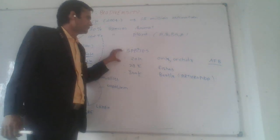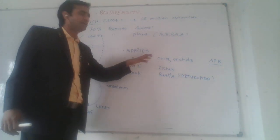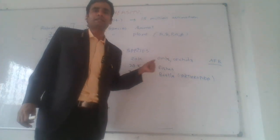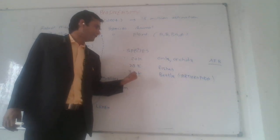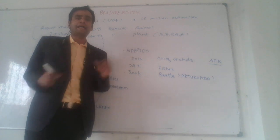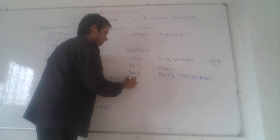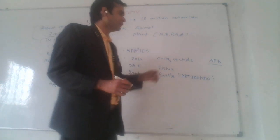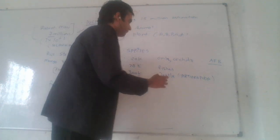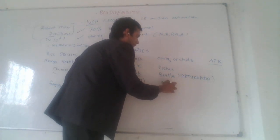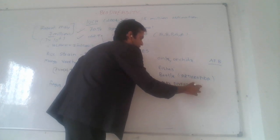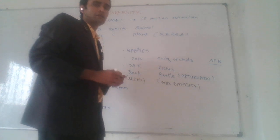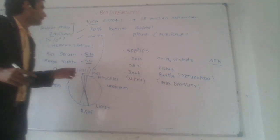There are some notable species counts: 20,000 species of ants and orchids, 28,000 species of fishes, and 300,000 species of beetles found on the earth. Beetles are members of Arthropoda, which has the maximum diversity on earth. Within Arthropoda, the class Insecta has the greatest diversity.